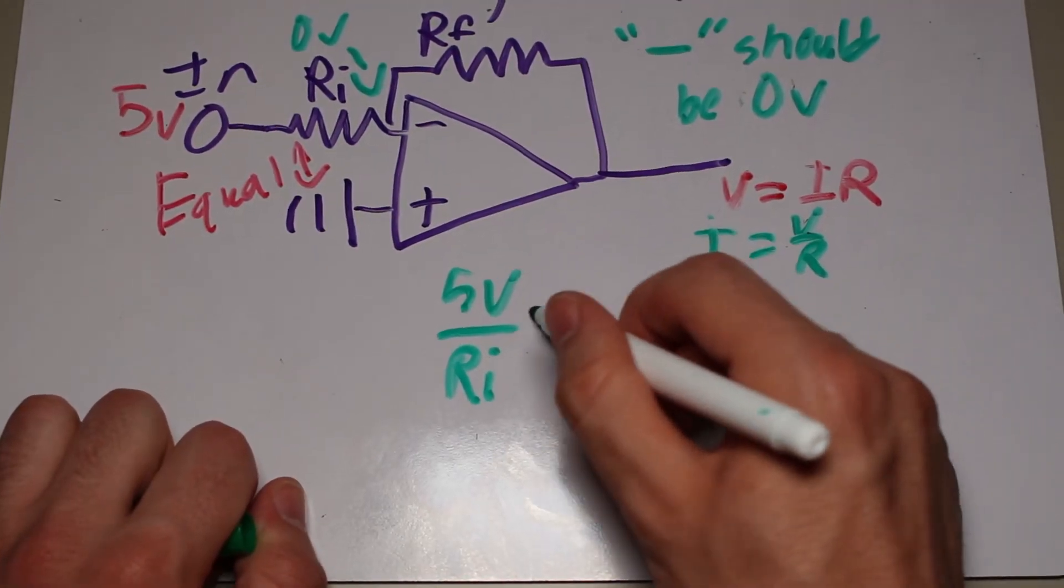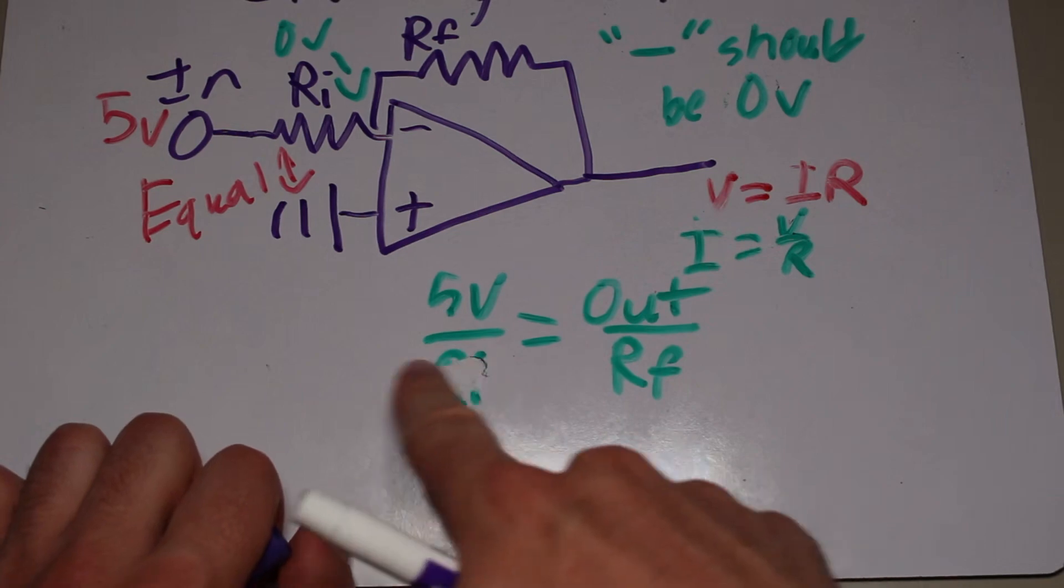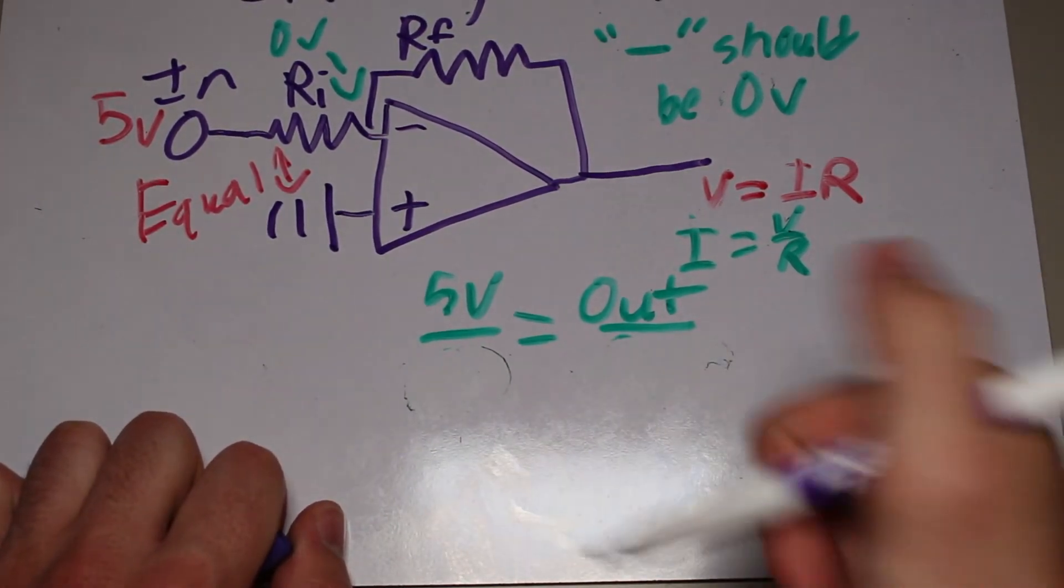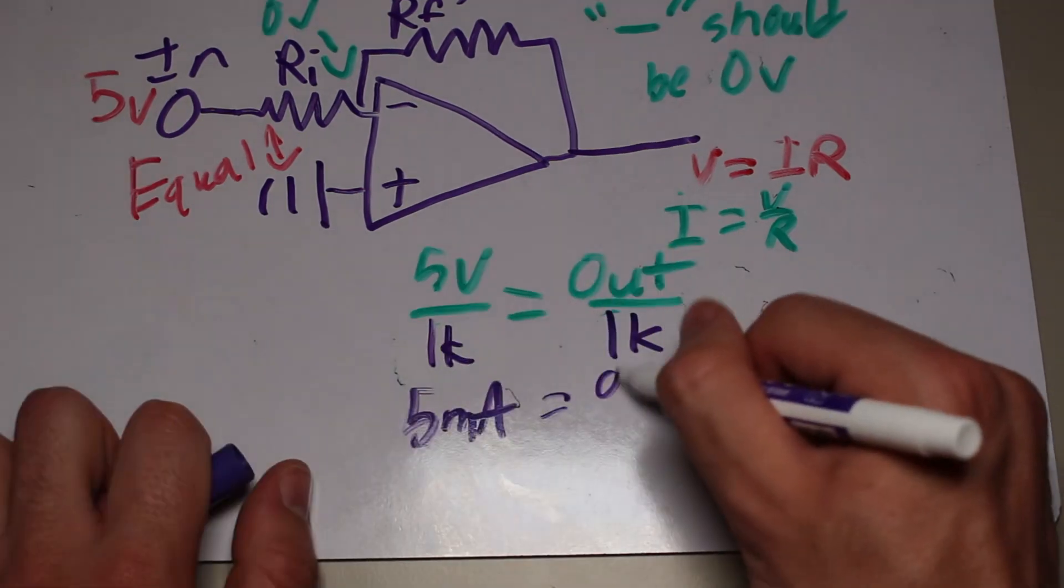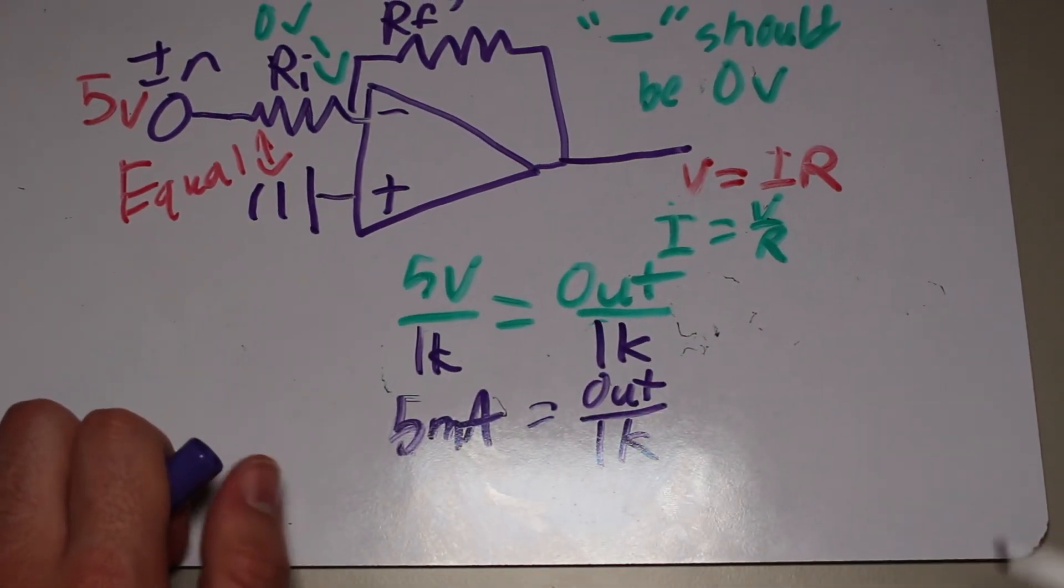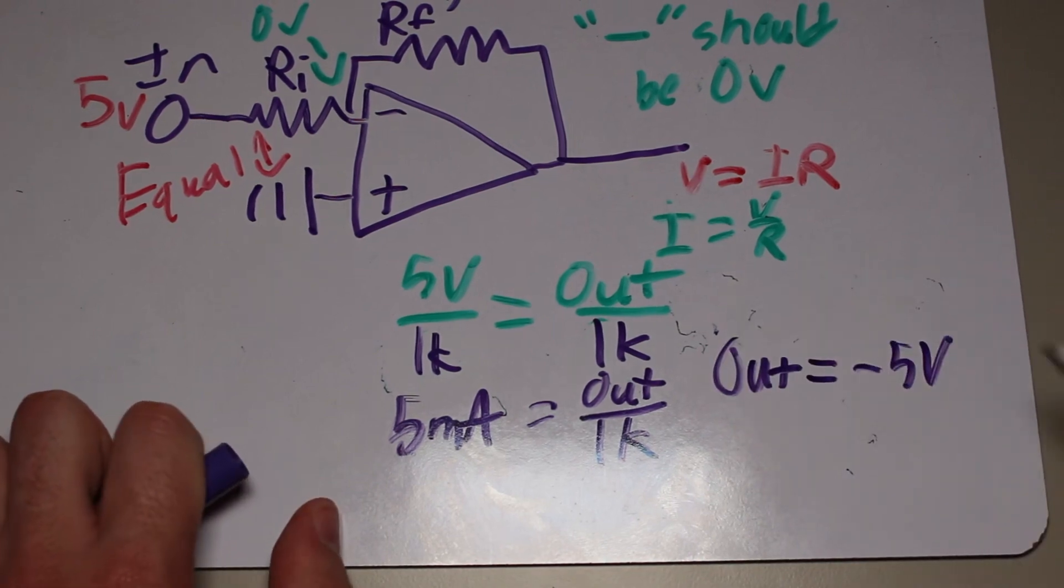Let's say that the two resistors are both 1k and the input is 5 volts. So, the input resistor will drop 5 volts at 5 milliamps. The output needs to counteract this with a negative 5 milliamps, so to do that, it outputs negative 5 volts across the resistor.